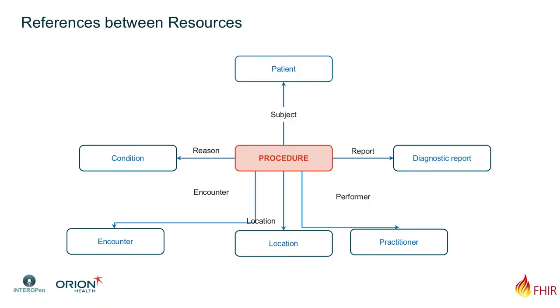This is another key aspect of FHIR: references between resources. A procedure resource on its own — say 'appendectomy' — simply says appendectomy was performed on such and such a date. What references do is give us the subject — who was it performed on — the performer, the encounter, the reason, and so forth. You build up a clinical scenario using references between resources. This morning you're going to take clinical scenarios and pick and choose the resources you need to create that scenario.